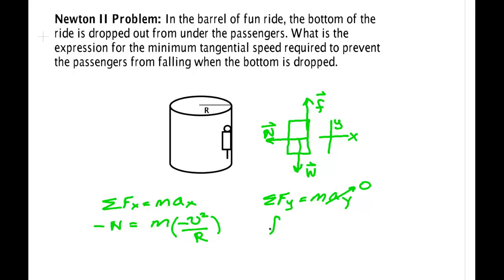Over here we have the friction force minus the weight is equal to zero. So in order for the person not to fall the friction force has to equal the weight.